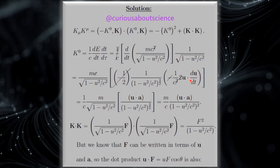We end up with the expression, and of course dU/dT is equal to the ordinary acceleration. We factor out the m and the square root and let everything pass through. After simplifying, we get a 1/2 plus a 3/2, which gives us a square — so everything is fine there. At this point you could put it in terms of gamma, but for the sake of comparison we look at what we have left for k·k, which gives us F² divided by (1 minus u²/c²).